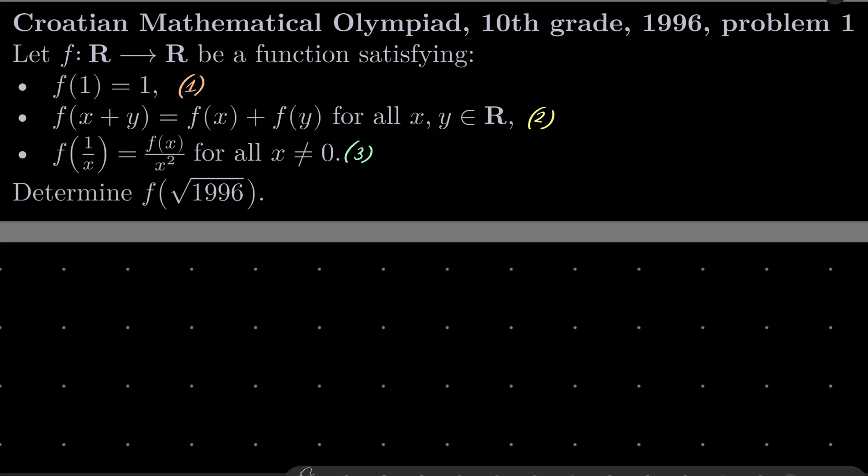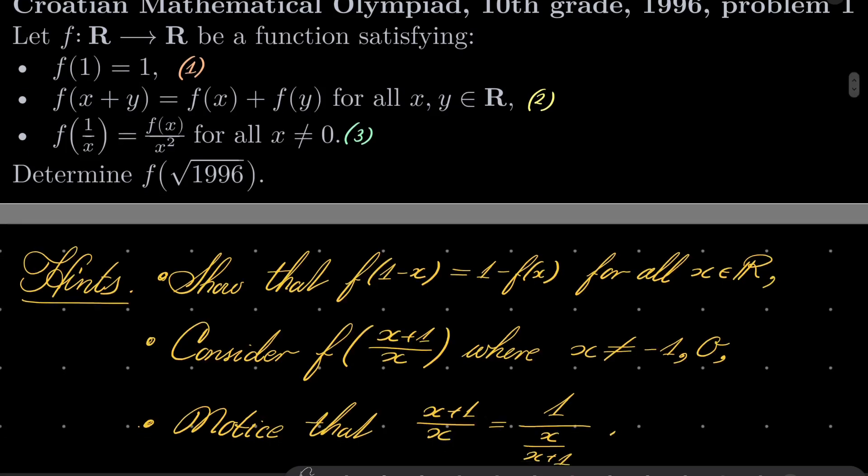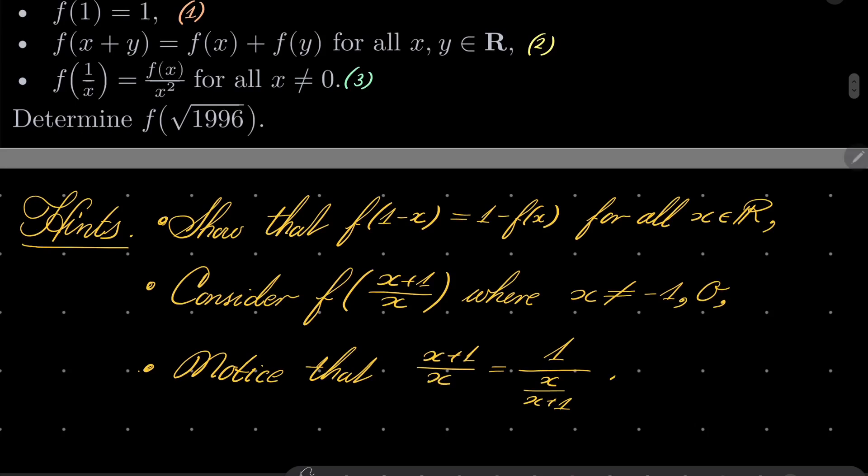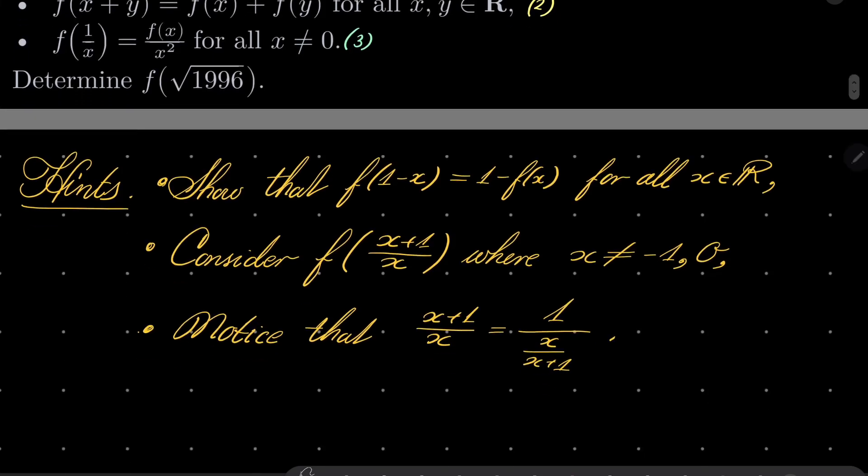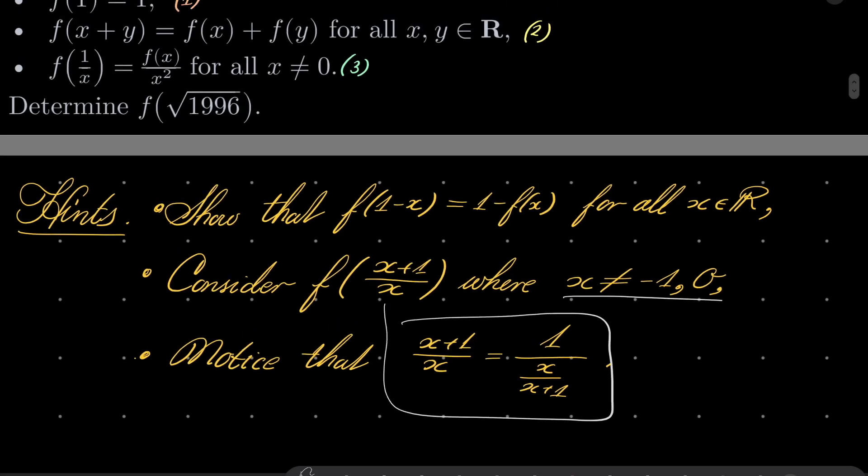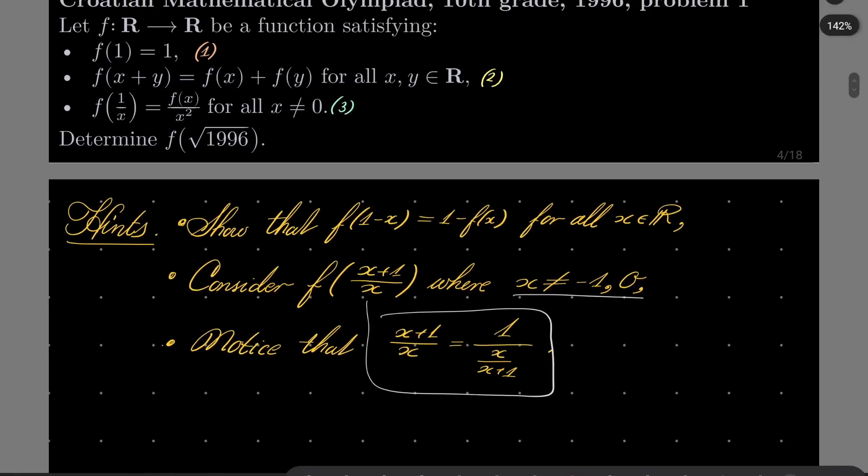So in fact we will find the general form of our function. Here are my hints. First show that f(1-x) = 1 - f(x) for all real numbers x, and consider this nifty expression f(x + 1/x), where x is neither -1 nor 0. And notice that this fraction can be written in two different ways, namely x + 1/x can be written as 1/x over (x+1). Use this fact and our conditions to find our function. Give this problem a try.